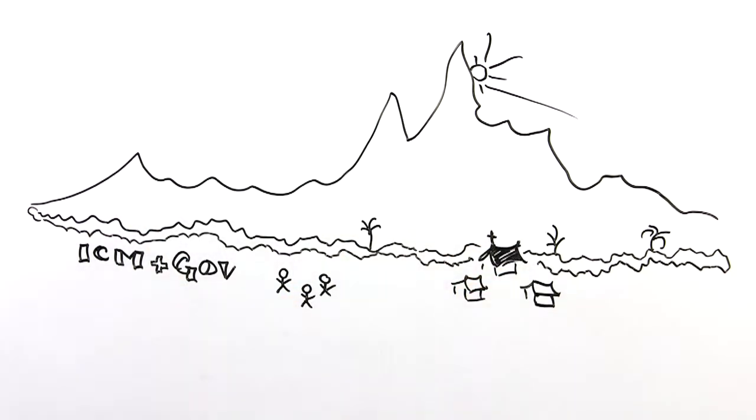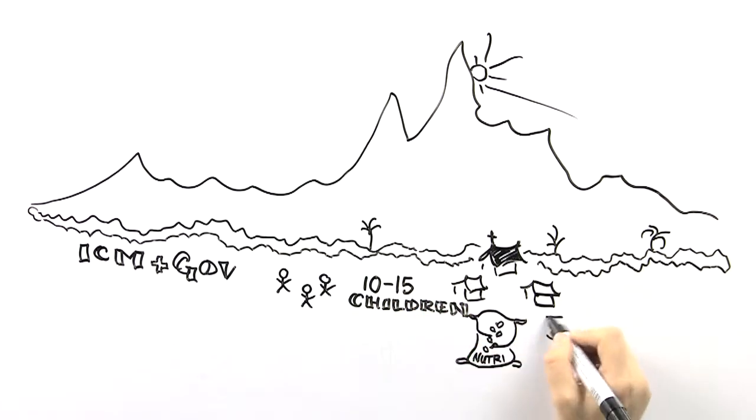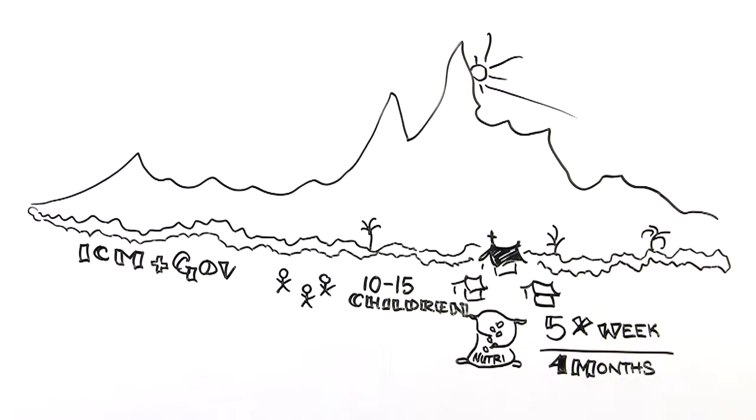In partnership with local ICM churches, ICM feeds 10 to 15 impoverished children nutritious NutriPak meals five times a week for four months. The children's weight and health is monitored throughout the program and we have seen astonishing results.